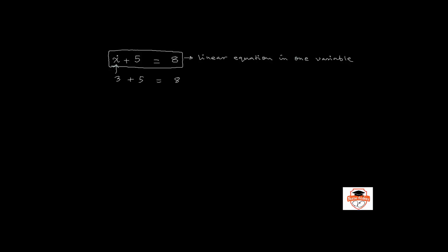It is linear because the highest power of x is x raised to the 1. Remember, x is the same as x raised to the first power. And in one variable, obviously, because the only variable in the equation or the only unknown is x. In this video, we shall limit our discussion to linear equations in one variable.